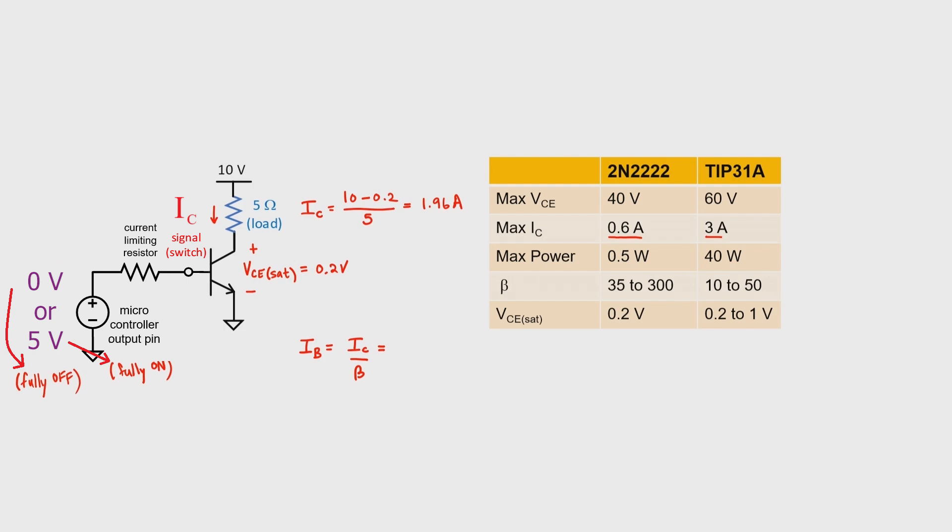But you might have noticed that the typical beta for a power transistor is a little bit lower than the typical beta for a signal transistor, and the reason is that there's more current flowing through its collector. If we take the worst-case scenario with our bipolar transistor and assume a beta of 10, then we're going to wind up with 196 milliamps going into the base.